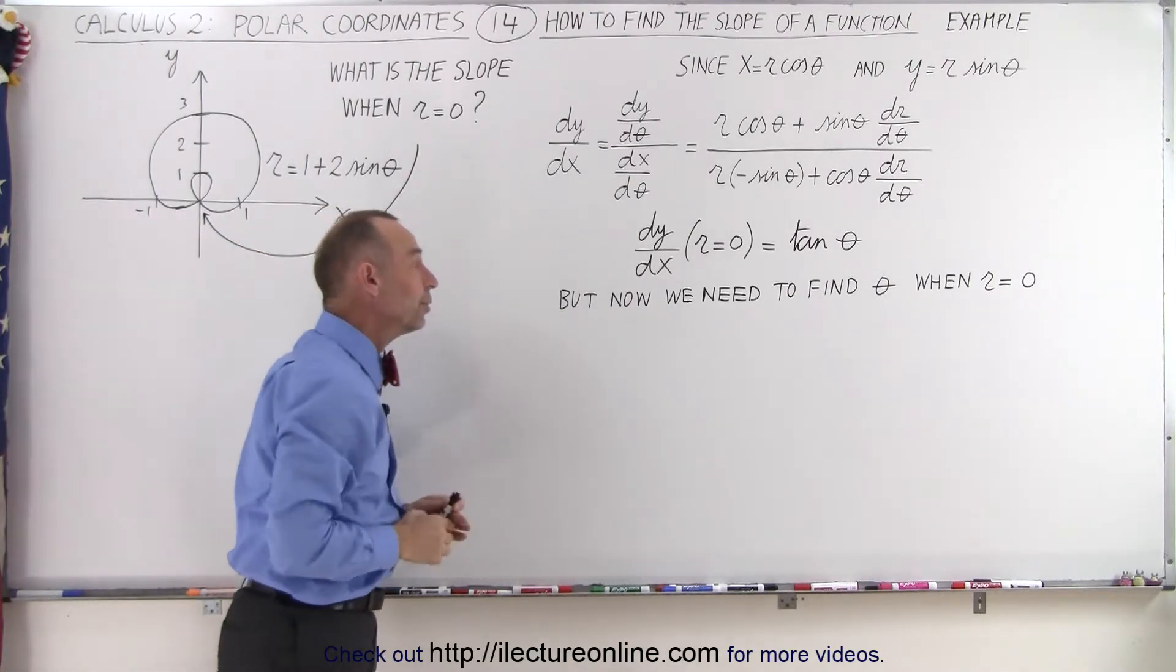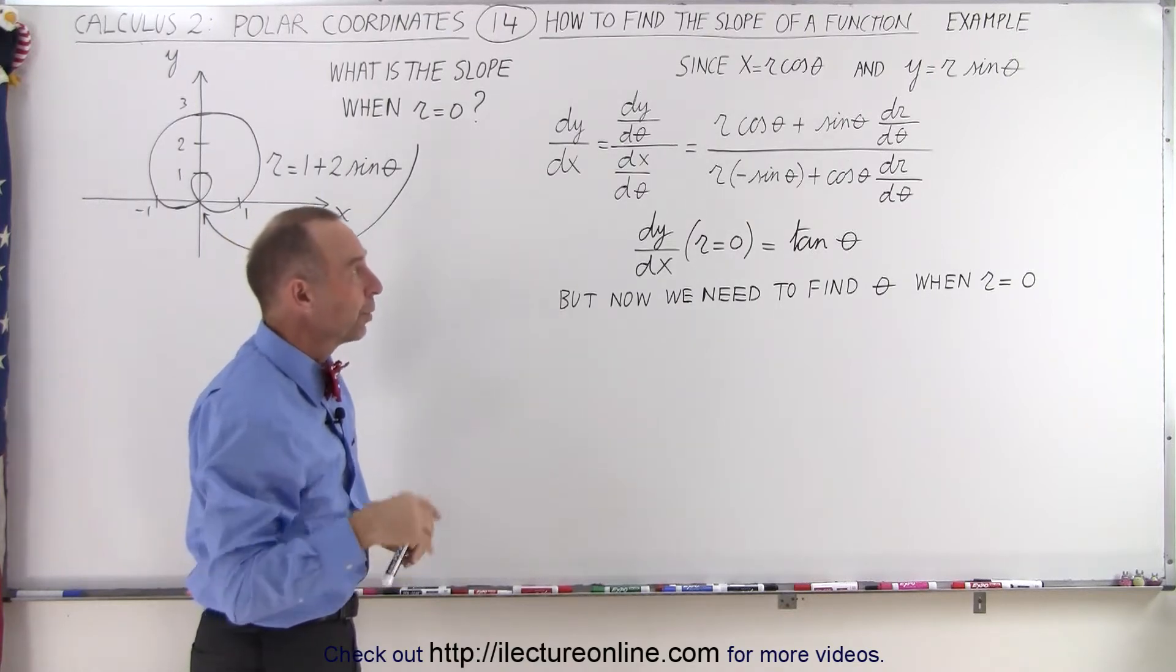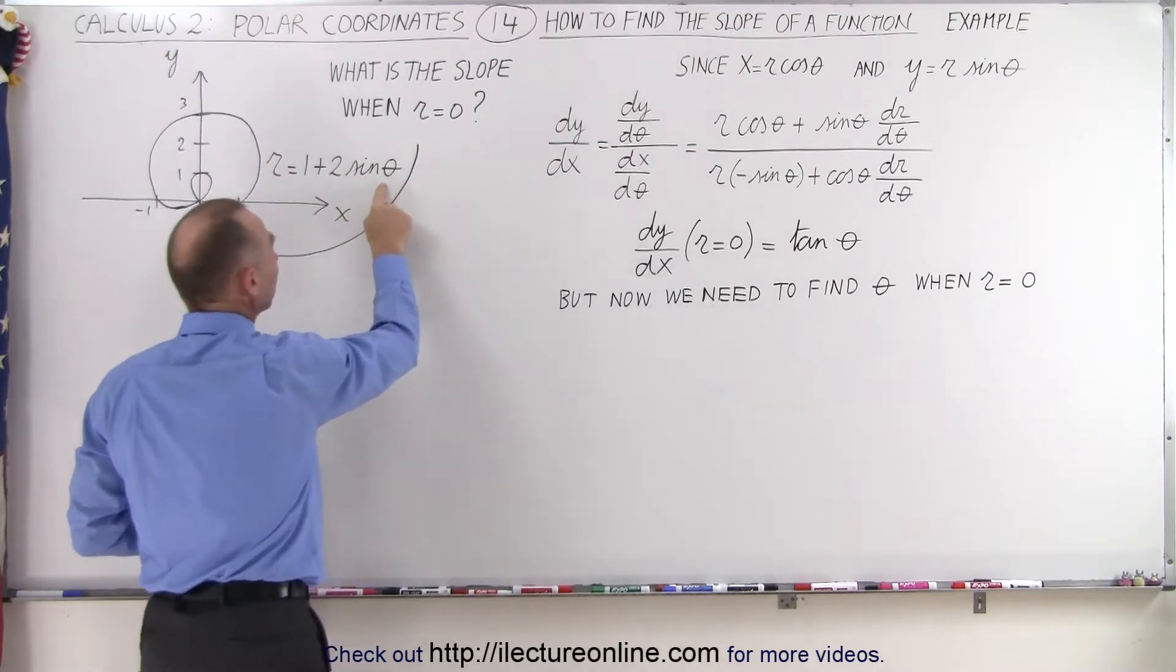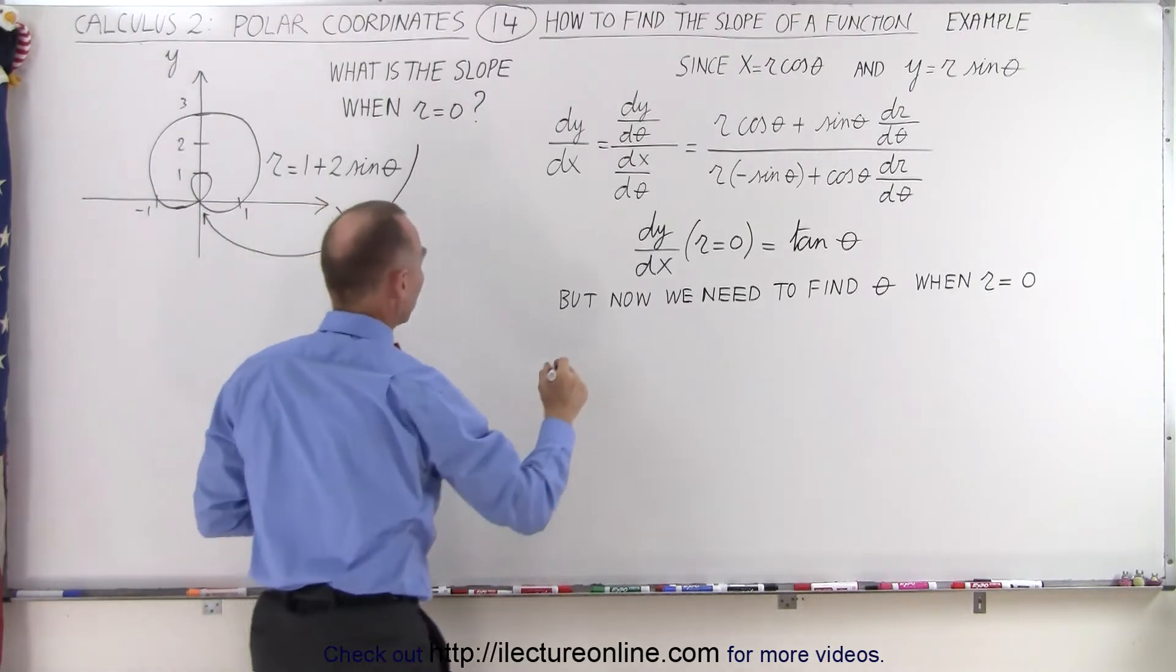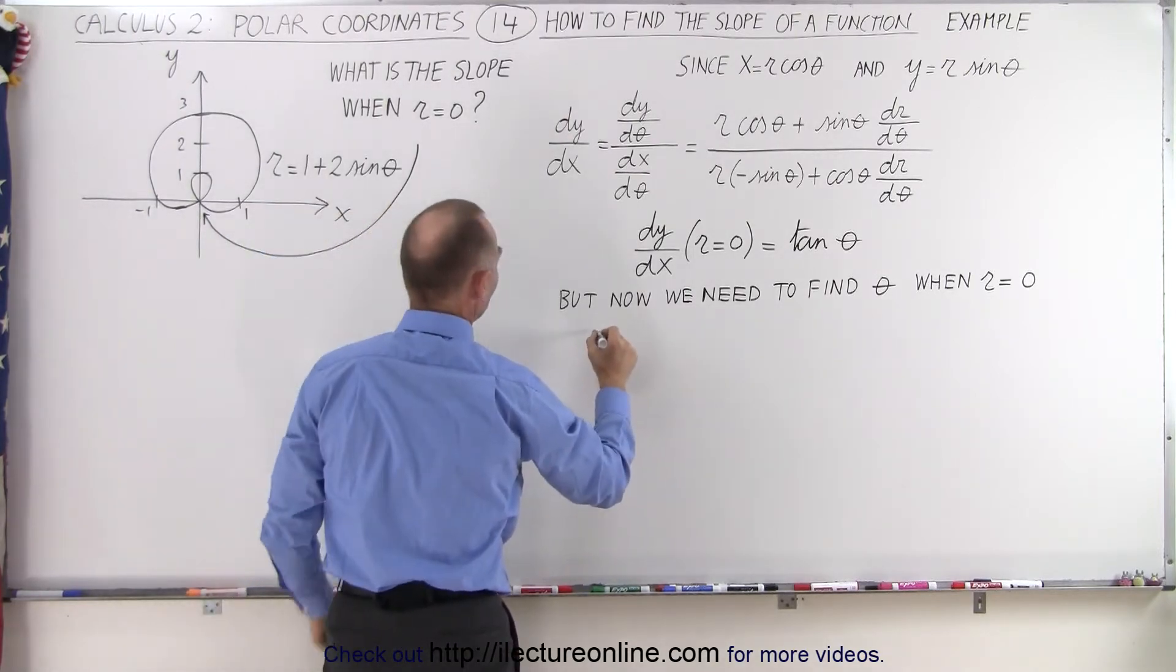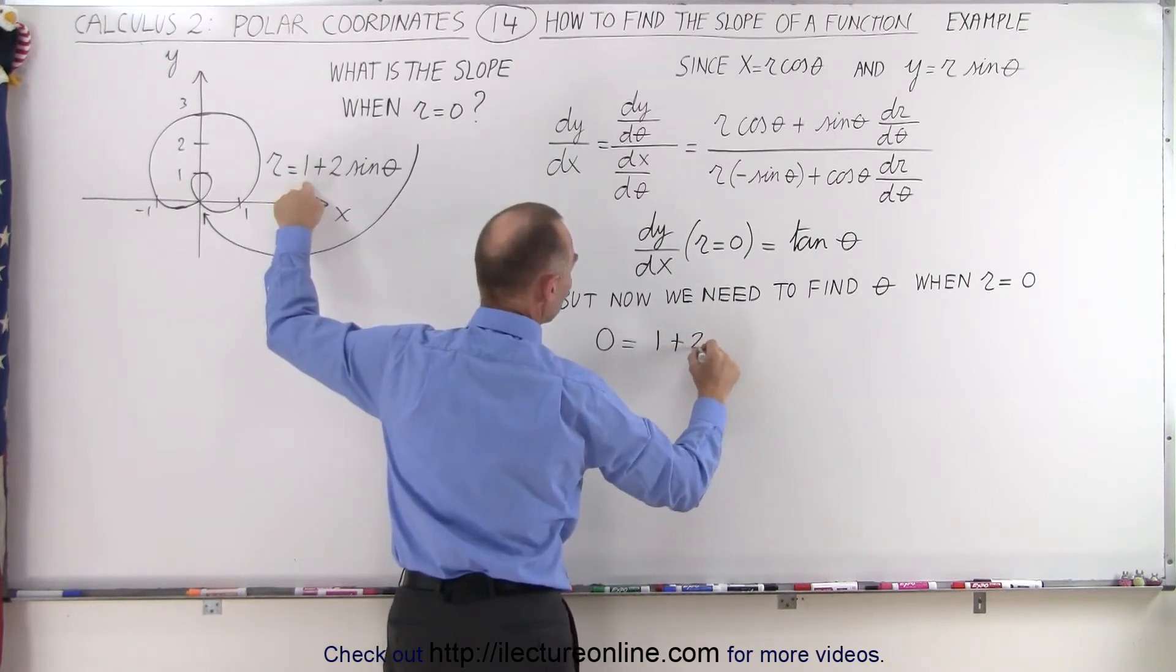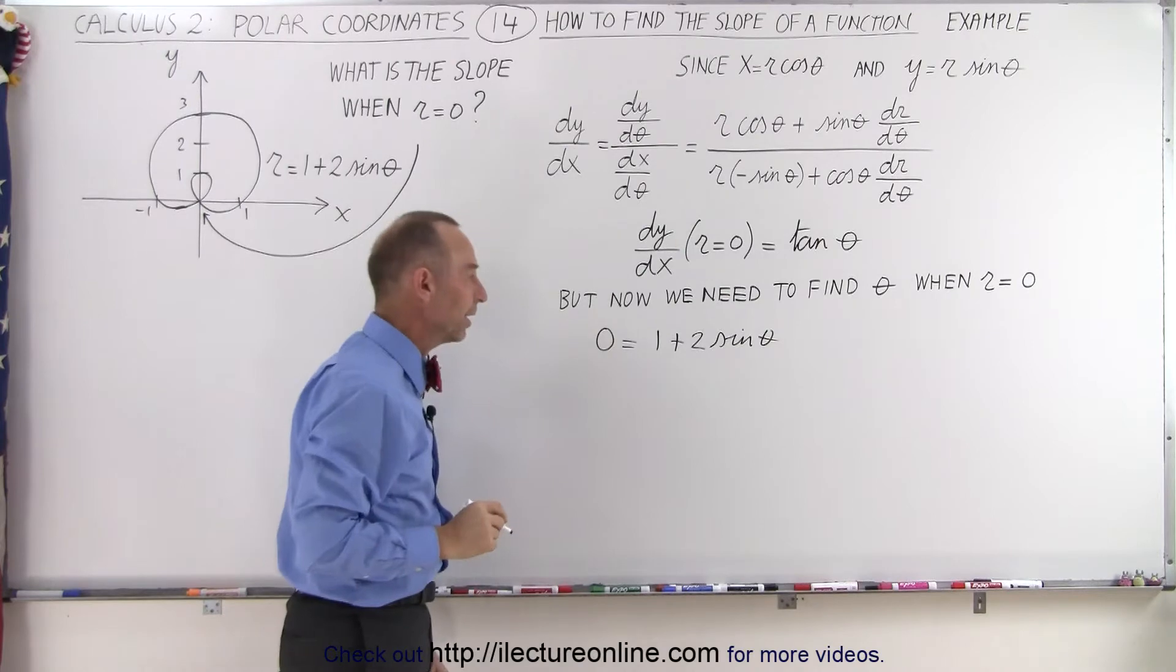The next thing we need to do is now we need to find theta when r is equal to 0, which means we're going to then go back to the original equation and plug in 0 for r and solve for theta. So from this equation we now write 0 is equal to 1 plus 2 times the sine of theta and we solve this for theta.